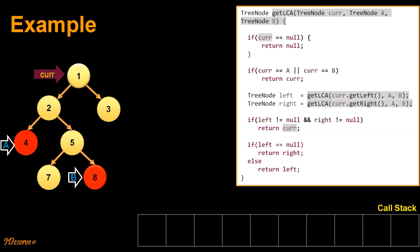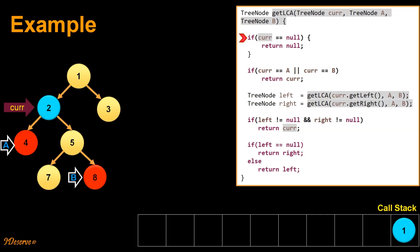Now let's visualize the code through the following animations. We are showing the current call stack, which will be populated when a function is recursively called for its left or right subtree. The current pointer is pointing to node 1. We start execution: current node is not null, so we move on. Current node is not equal to either A or B, so we move on. We recursively call for the left subtree — this call should return whether node A or node B was found in the left subtree, or null if not. Since we are calling getLCA recursively, we store the function state in the call stack so that when the call to the left subtree returns, we can resume execution for the current function call.